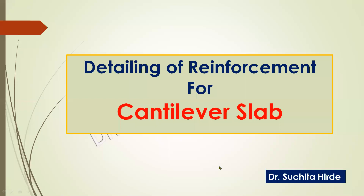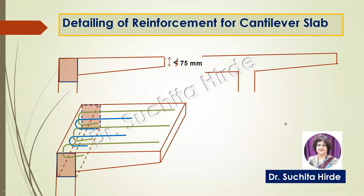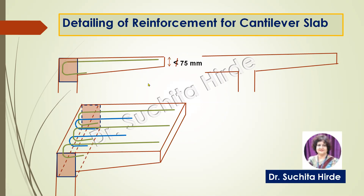Now let us start with detailing of reinforcement for cantilever slab. In a cantilever slab, one end is a fixed support and the other is free. Therefore, bending moment is maximum at the fixed end, and whatever depth we calculate is to be provided at that level. As we go towards the free end, the bending moment reduces to zero. However, a minimum thickness of 75 mm is provided at the free end, so normally 75 mm to 80 mm thickness is provided there, while the design depth is provided at the fixed support.